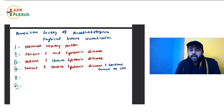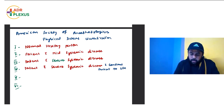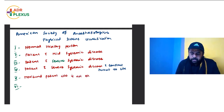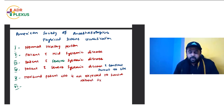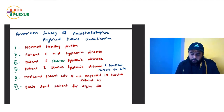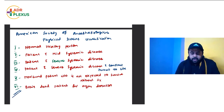ASA 4 is a patient with severe systemic disease with constant threat to life — that is the definition. ASA 5 is a moribund patient who is not expected to survive without surgery. ASA 6 is a brain-dead patient for organ donation. This was a question asked a couple of years back and is very, very important.